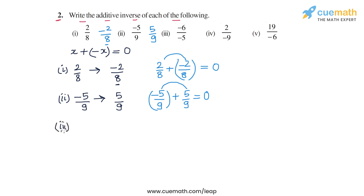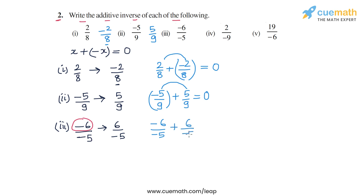In part three, the rational number is -6/-5. To take the negative of this, we take the numerator, which is -6, and invert the sign of the numerator. That gives us 6/-5. So the additive inverse of -6/-5 is 6/-5. We can verify: the denominators are the same, and the numerators -6 and 6 will add to zero.